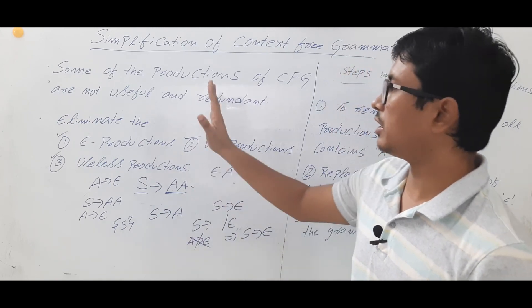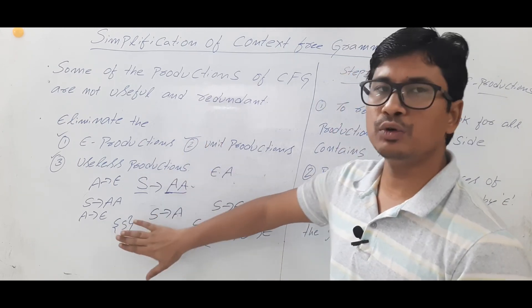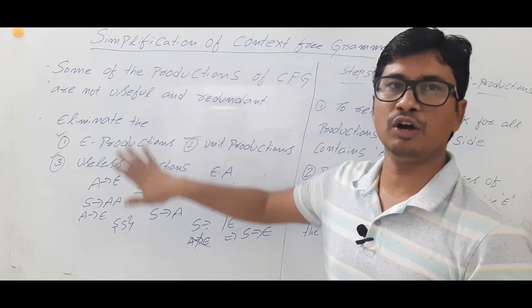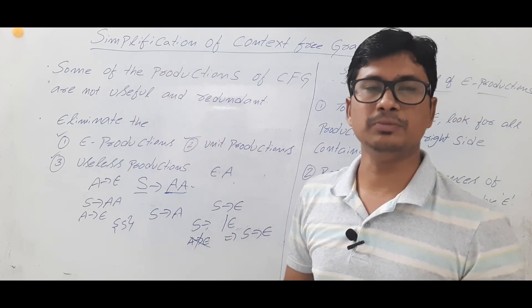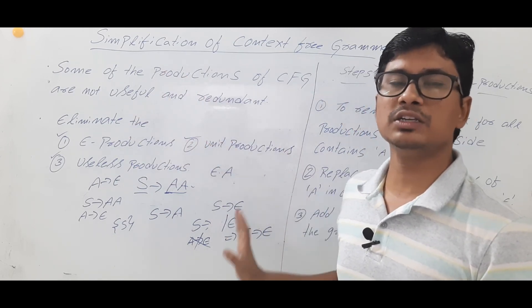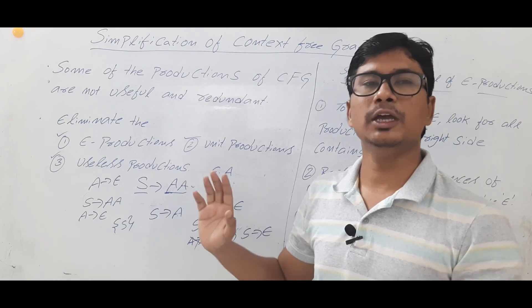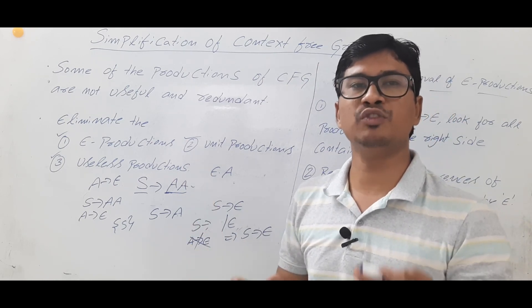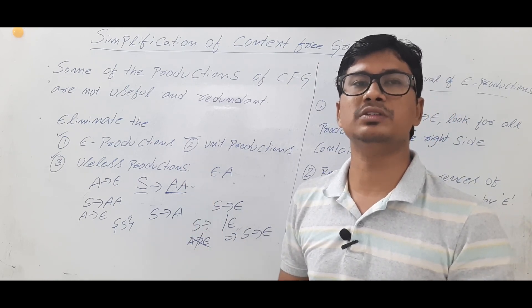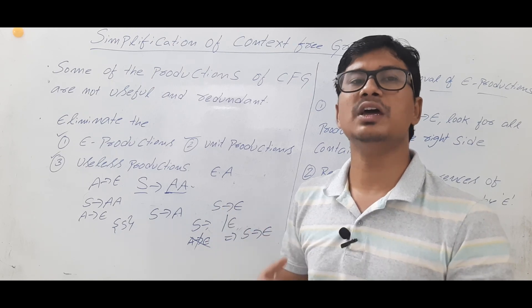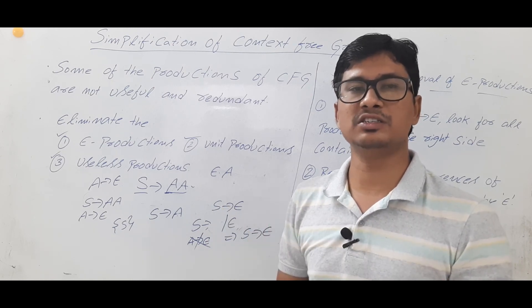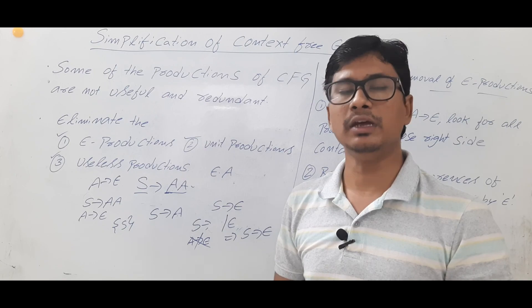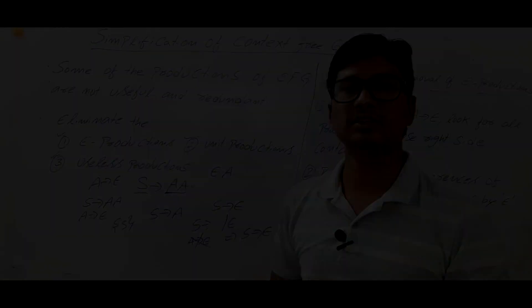I hope you have understood how to represent a Type 2 grammar, why we follow the simplification procedure, and what the steps are in epsilon production elimination. In the next video I will take a few examples related to epsilon productions and discuss the concept so that you understand it in a better way. Thank you so much.